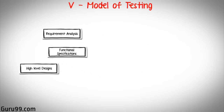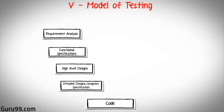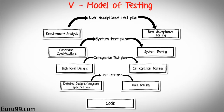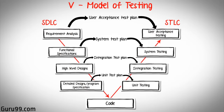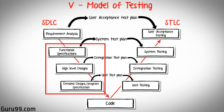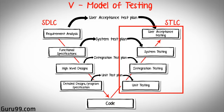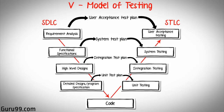To address this concern, the V model of testing was developed. For every phase in the development lifecycle, there is a corresponding testing phase. The left side of the model is the software development lifecycle; the right side is the software test lifecycle. The entire figure looks like a V, hence the name V model. In this figure, you'll find a few stages different from the waterfall method. These differences, along with the details of each testing phase, will be discussed in a later tutorial.